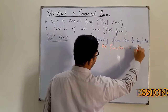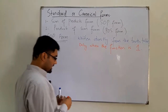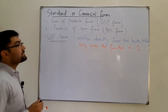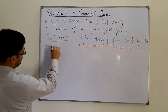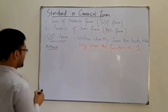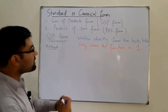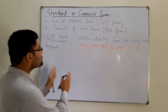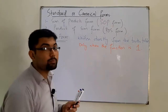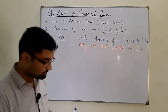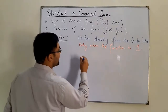They are written only when the function's value is one. The method is simple: you go to the truth table, find where the output is one, and just write those bits in an AND form.